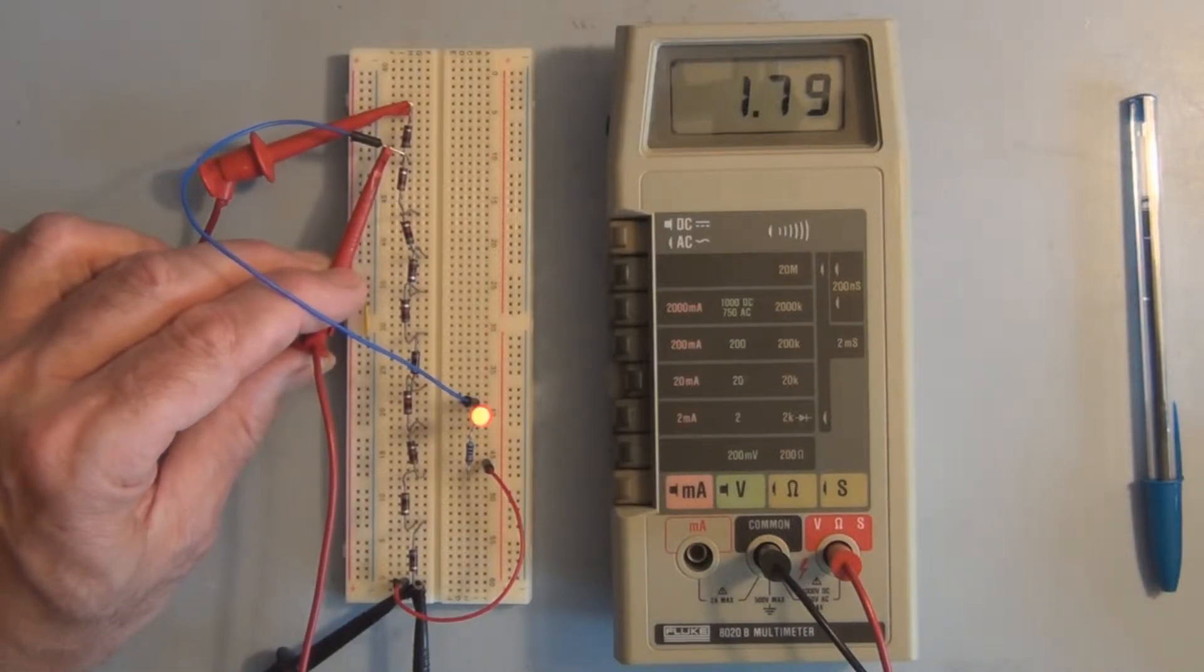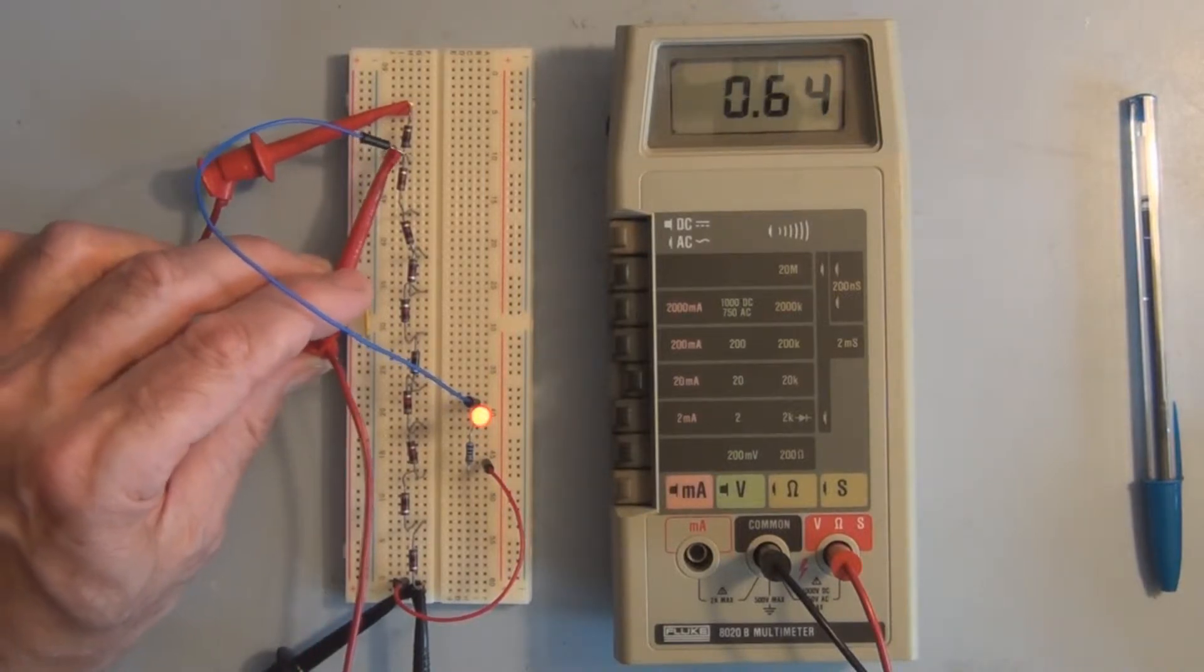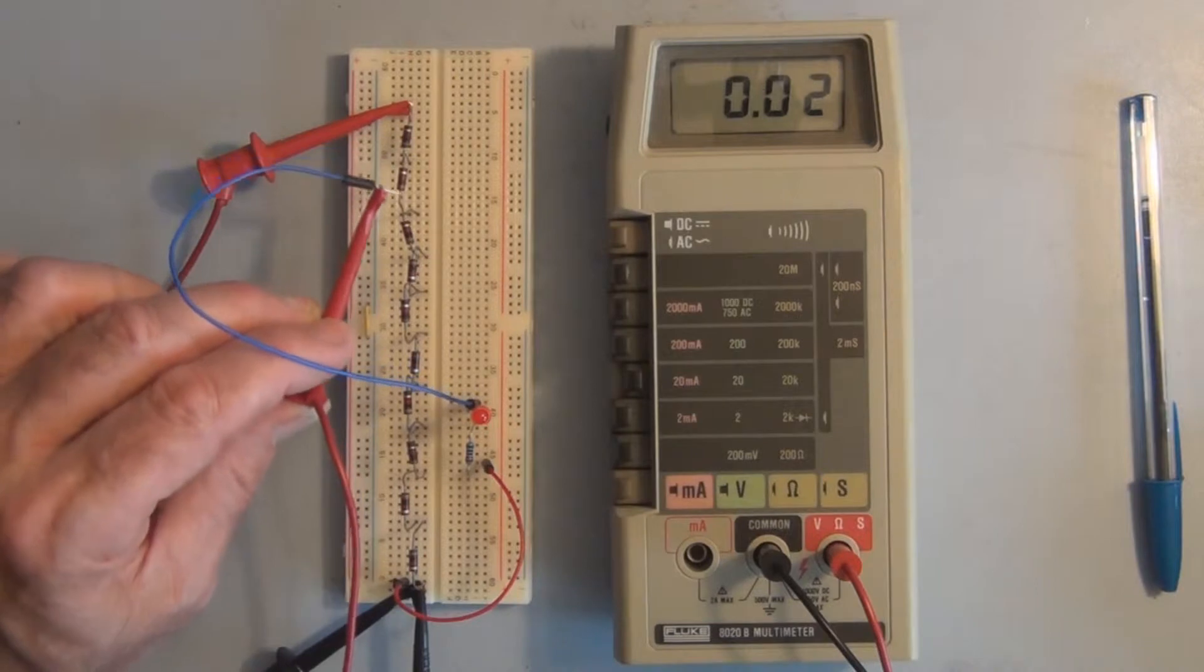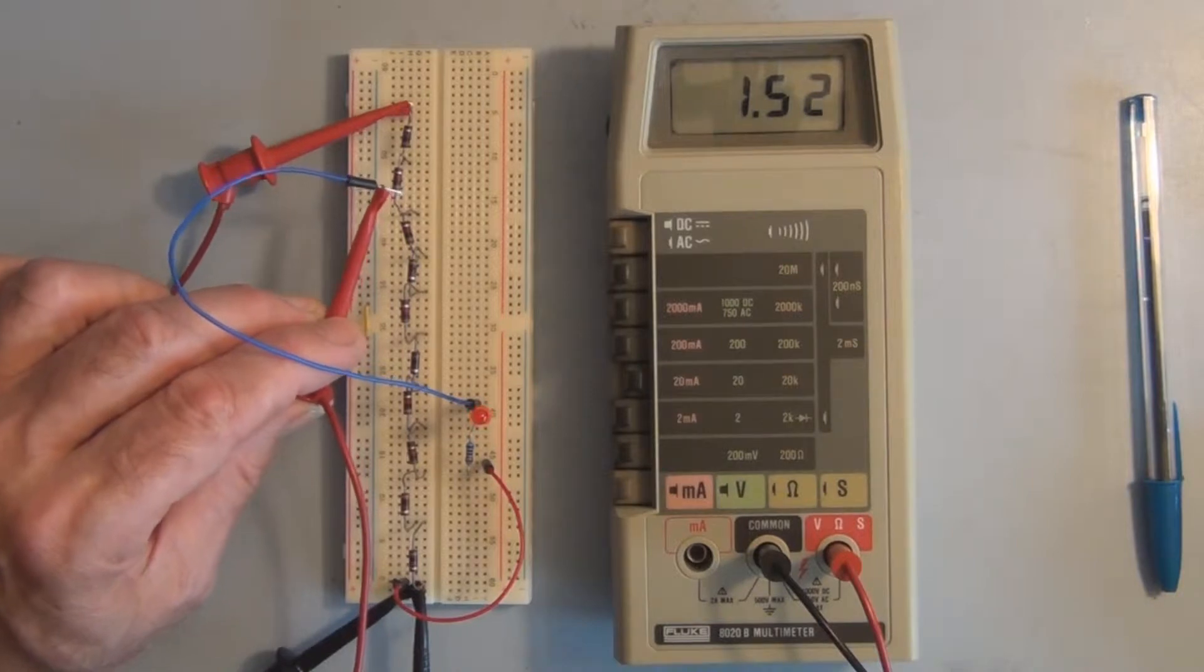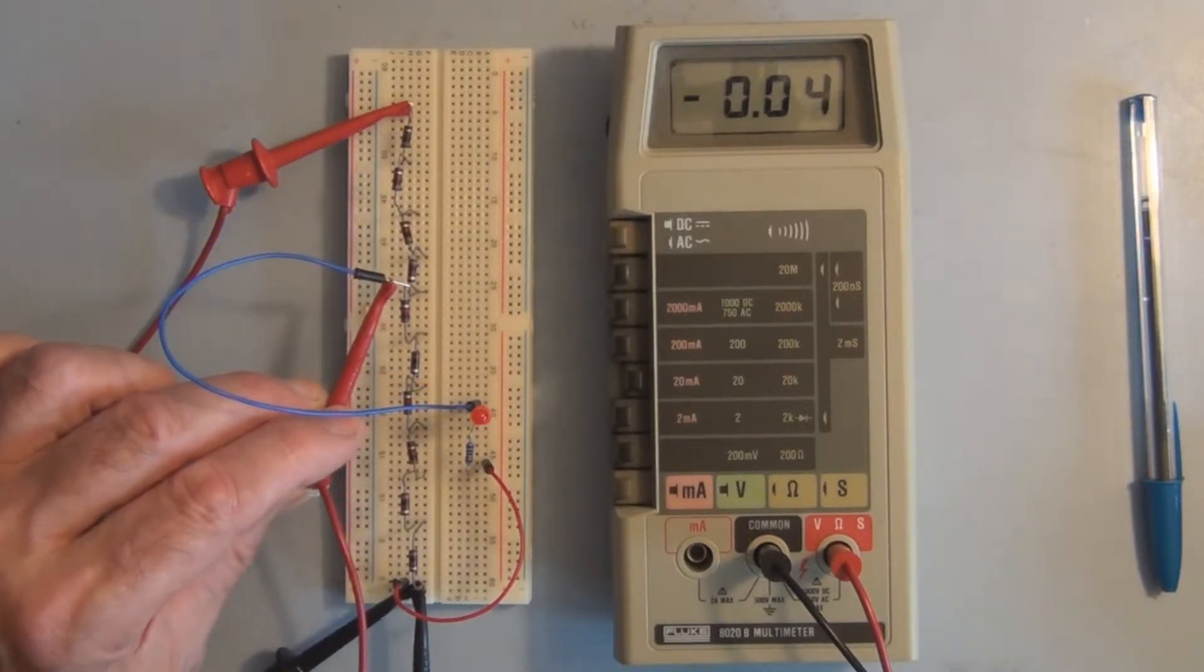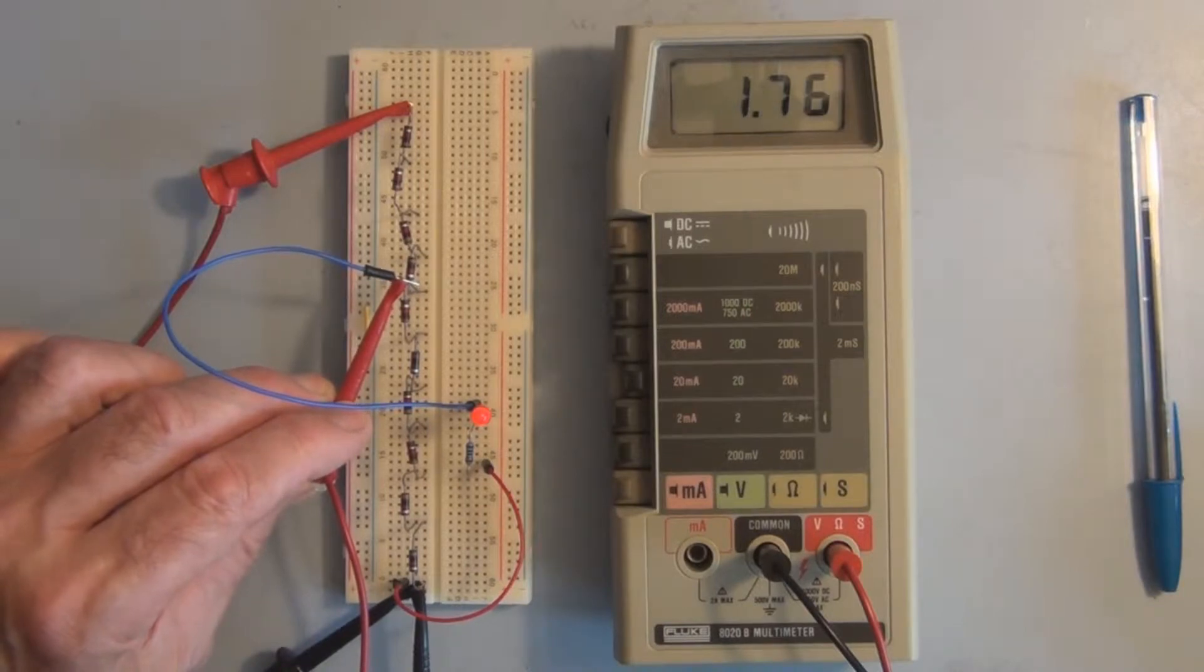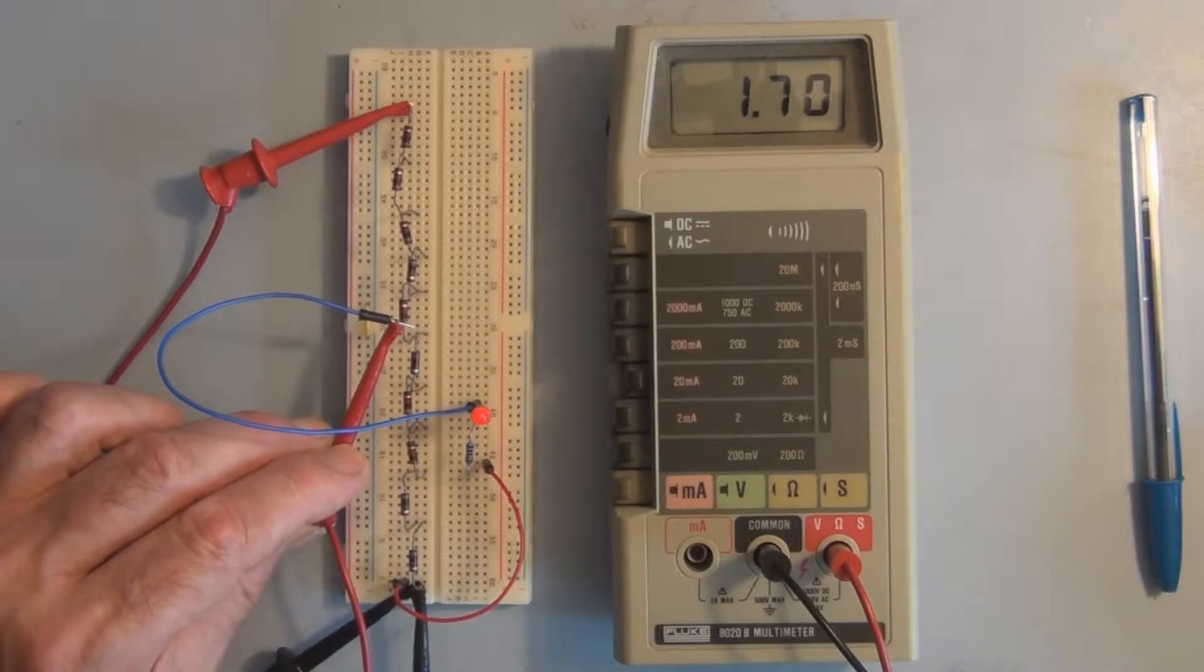So here we only have 2.3 volts. Here we have 1.9 volts, 1.85, 1.76, 1.7.